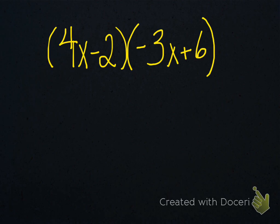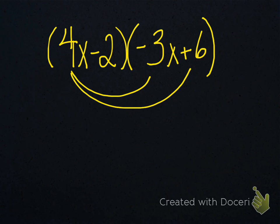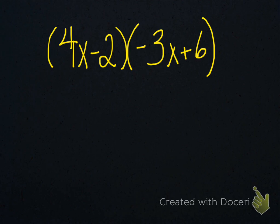This is a binomial times another binomial. As long as we have a polynomial that has two terms or more times another polynomial that has two terms or more, we have to use a different method that will distribute the multiplication from one of the terms to all of the other terms — kind of like a complex distributive property. I have a method called the box method.